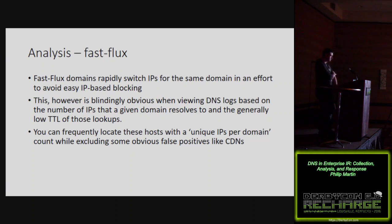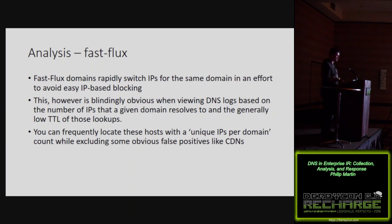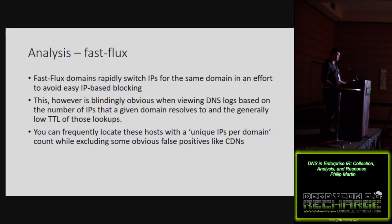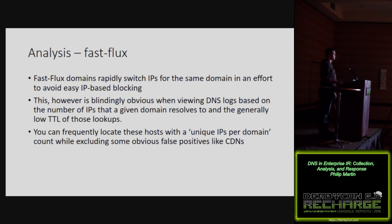Fast flux: these are domains that rapidly switch between IPs to make IP-based blocking hard. How do you detect this in DNS logs? It's actually blindingly obvious. A quick histogram of unique IPs per domain name will show it. You'll see high values from places like Google with six to eight results, then some with several hundred — extraordinarily suspicious.